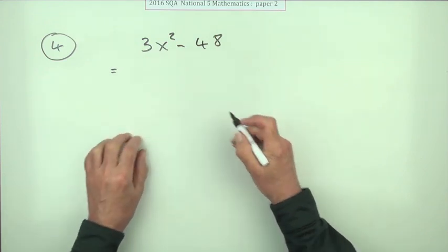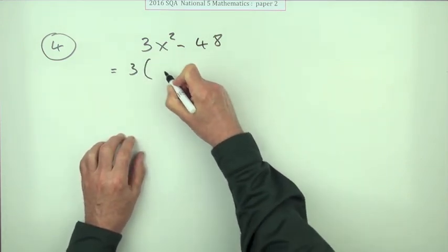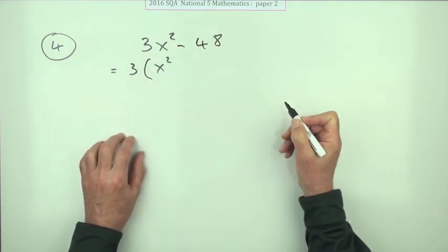they both divide by 3, so 3 comes out of it, leaving just a little x-squared.